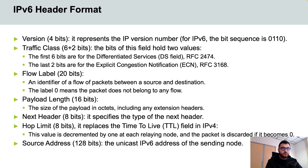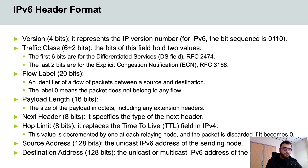Next we have the source address field, which is the 128-bit address field of the original source of the IPv6 datagram. The last field is the destination address, a 128-bit address field of the destination — or destinations, in the case of a multicast IPv6 address — of the IPv6 datagram.